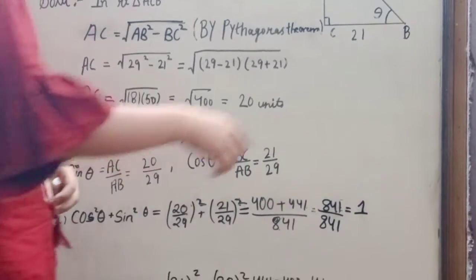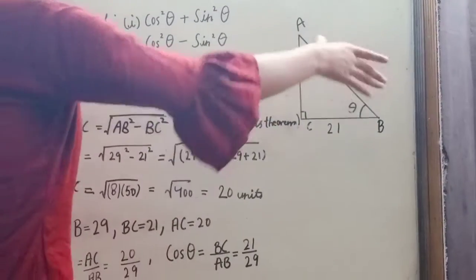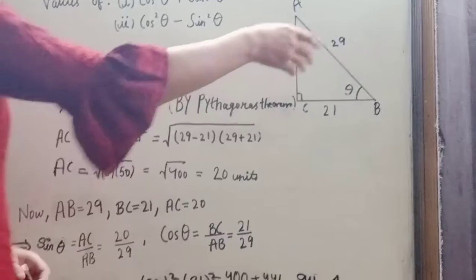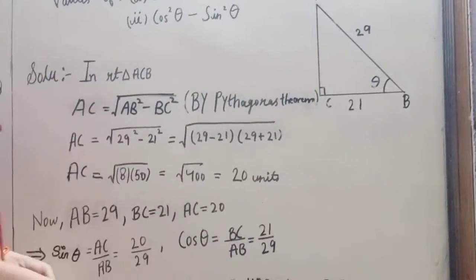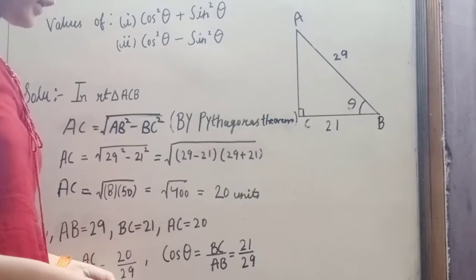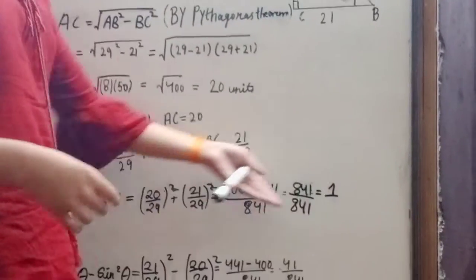sin theta is equal to AC upon AB is equal to 20 upon 29. And cos square theta plus sin square theta, solve this. We get 1.